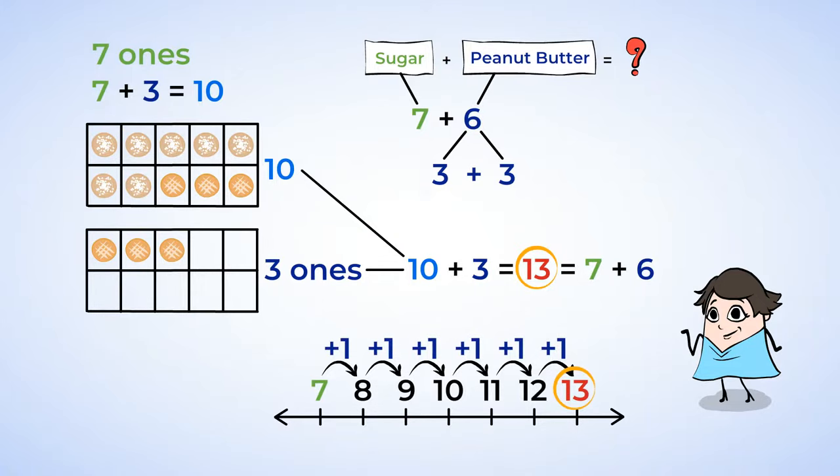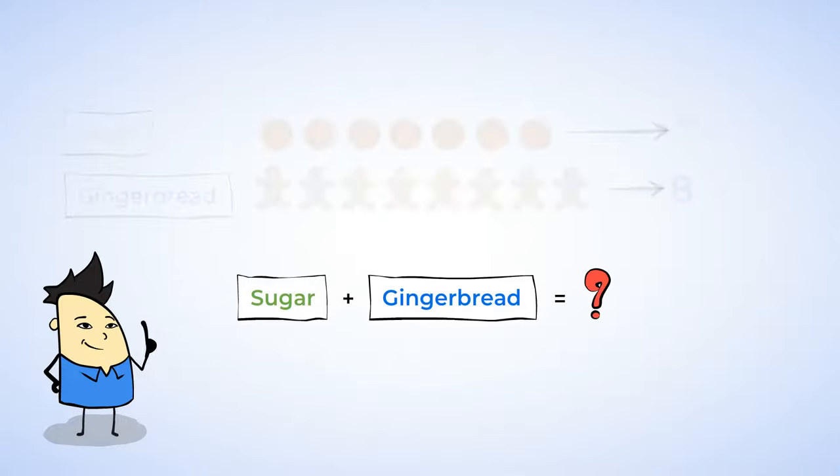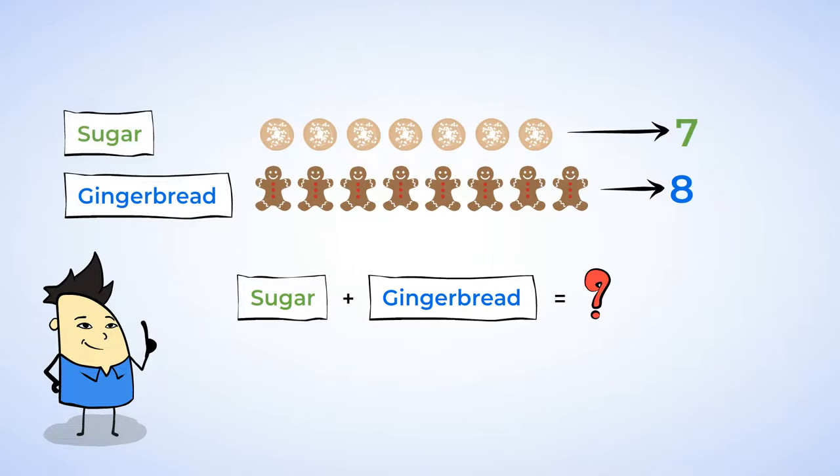The last task, think of the steps we followed and try to do it on your own. You need to find out how many people like gingerbread cookies and sugar cookies. Back to the answers. 8 people like gingerbread cookies and 7 people like sugar cookies as their favorites. So far, so good.